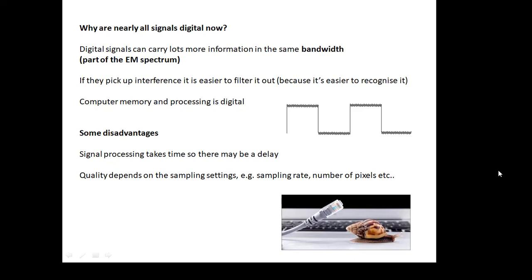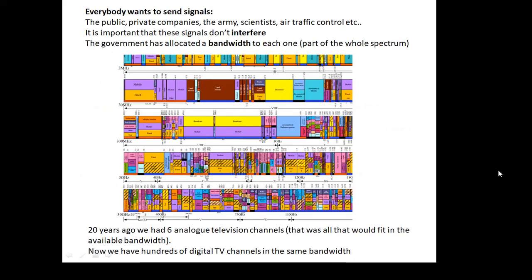There are a couple of disadvantages. If you process digital signals, it takes a little bit of time, which might involve a delay. These days, now that we have broadband, we can handle lots and lots and lots of information at the same time. That's not so much of a problem as it used to be. The quality depends on the sample settings, in other words, the sampling rate, and the number of pixels, etc.